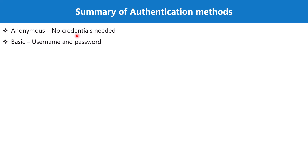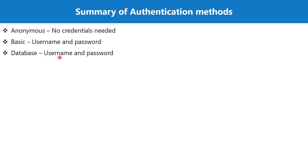Another credential method is basic, which requires you to give a username and a password before you are given permission to connect to that particular data source. Next is the database authentication method, which we actually use when connecting to databases. It is similar to the basic method where you provide a username and a password.